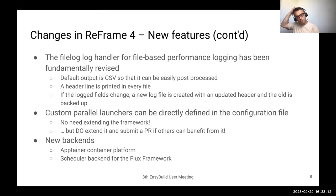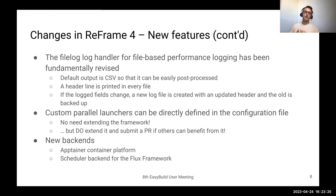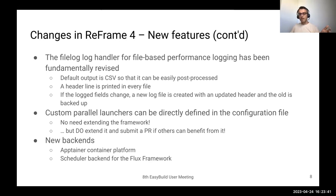Another thing is custom parallel launchers. We've seen that several sites need to do small tweaks and have even written custom launchers. In the past, you had to do that inside the framework — either submit a PR or maintain a separate fork. Now there's no need to do this, as you can do that in the configuration file. I have an example later on. But if your launcher is good for the community, please submit a PR — that's the purpose of it.